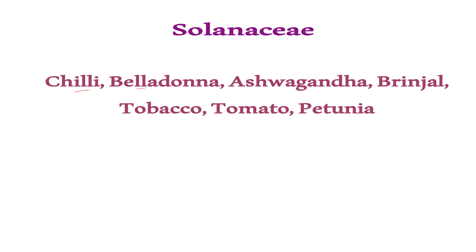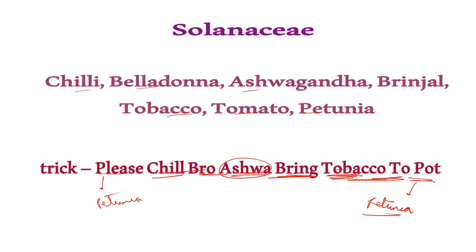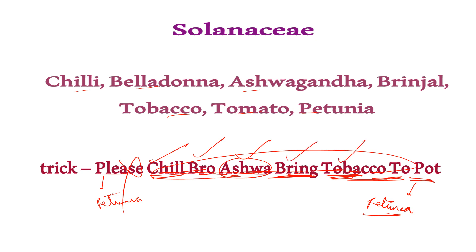Next is the Solanaceae family. Examples are chili, belladonna, ashwagandha, brinjal, tobacco, tomato and petunia. The trick is: 'Please chill bro, ashwa bring tobacco to pot.' From 'P' petunia, 'chill' chili, 'bro' belladonna, 'ashwa' ashwagandha, 'bring' brinjal, 'tobacco' tobacco, 'to' tomato, 'pot' petunia again.